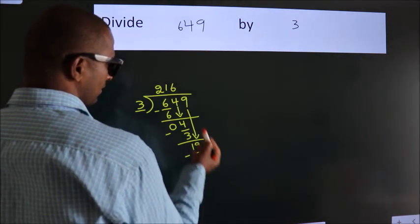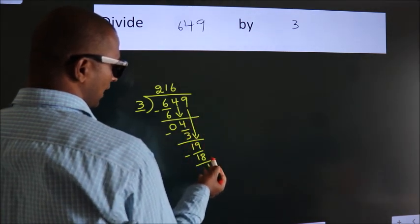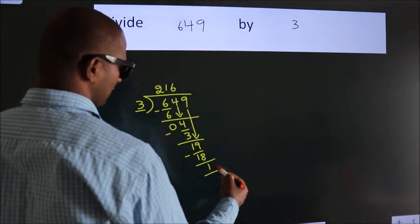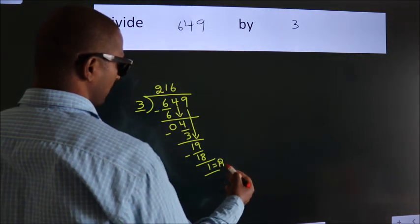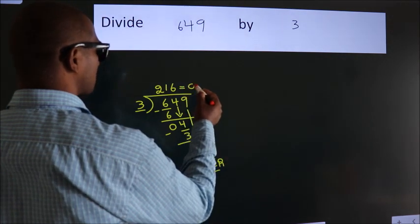After this, no more numbers to bring it down. So we stop here. This is our remainder. This is our quotient.